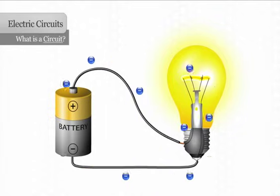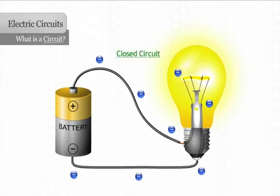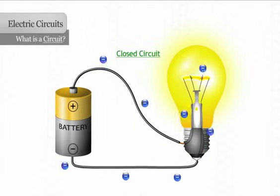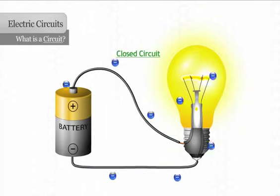The unbroken path that the electrons follow is called a closed circuit, because electricity will only flow on an unbroken path. The light bulb will not light unless there is a closed circuit.